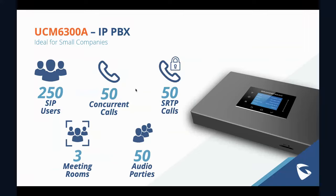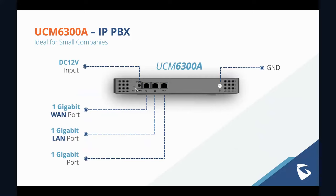Starting with the 6300A: the 6300A, 6302A, and 6304A all use the same physical box as the UCM 6301 and 6302, so they may look familiar. The 6300A supports 250 users and 50 concurrent calls. You get three voice conference meeting rooms built right into it, supporting up to 50 audio conference parties per room. As mentioned, there are no FXS and no FXO ports on this device — just the three gigabit ports and your power port. It's a great option for small companies given the price point.